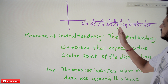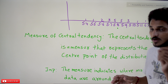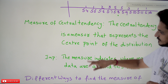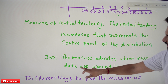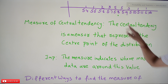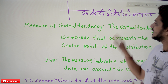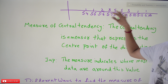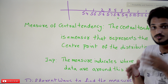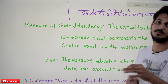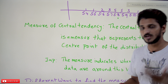One more important point: this measure indicates where most of the data is clustered — most data is around this central value. If you identify that central tendency point, you know where most of the data lies. That is what measure of central tendency means.